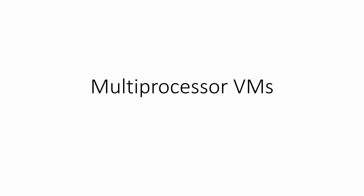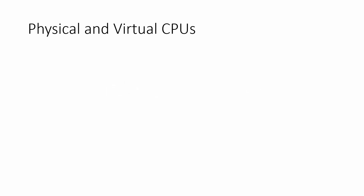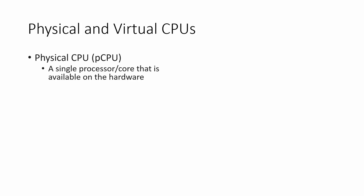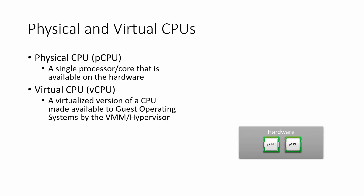In this video we'll talk about VMs with multiple processors. First, let's look at the distinction between physical and virtual CPUs. A physical CPU, also known as a PCPU, is a single processor or core available on the hardware. Virtual CPUs are virtualized versions of CPUs made available to the guest operating system through a VMM or hypervisor.